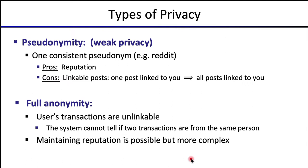There are lots of types of privacy in various systems. The first is pseudonymity, often called weak privacy, where every user has a pseudonym and all their transactions are affiliated with that pseudonym — for example, on Reddit. The nice thing about pseudonym systems is it's easy to implement reputation. However, if any post becomes linked to the physical entity, all posts are linked. So it's very difficult to maintain separation between the physical entity and the pseudonym, which is why pseudonym systems are considered to provide only weak privacy.